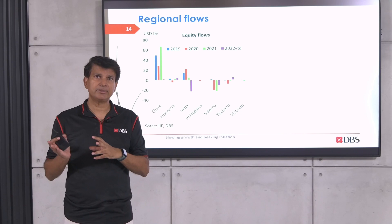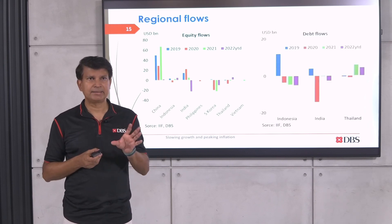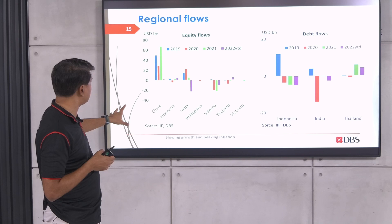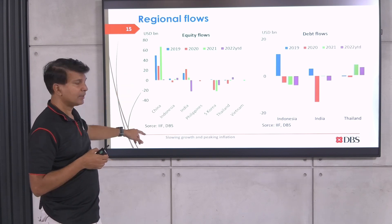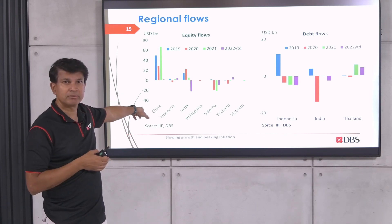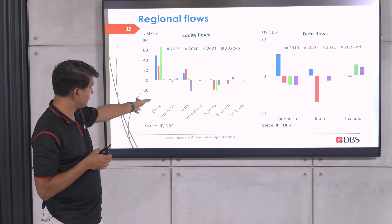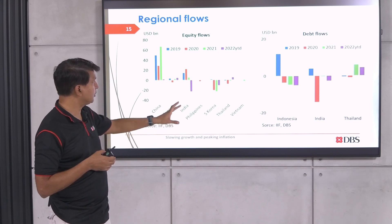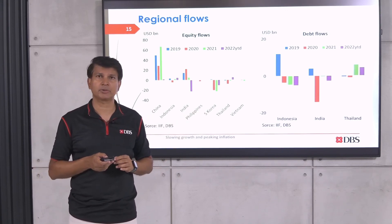High US rates and inflation worries have been very turbulent for emerging markets. Looking at equity and debt flows into key Asian markets: China in 2019-2021 received $40-60 billion worth of inflows; this year, virtually nothing. India has seen massive equity outflows, South Korea has seen three years of equity outflows, and Indonesia and India have seen quite a bit of debt outflows. Thailand has a little bit of inflows. Duncan will cover the Thai debt story in greater detail.